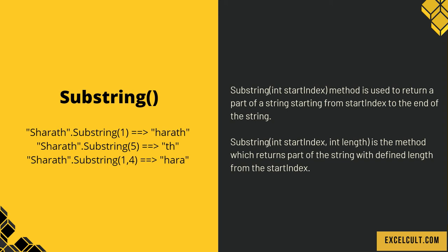When substring takes two arguments, the first is the start index and the second is the length to extract. For example, 'SHERATH'.substring(1, 4) — index 1 corresponds to H, and we take 4 characters from there, giving us 'HARA'.